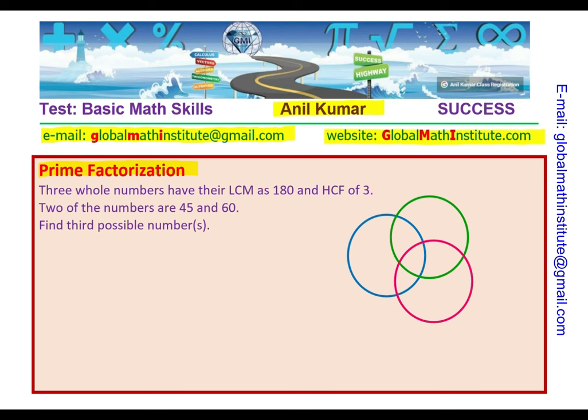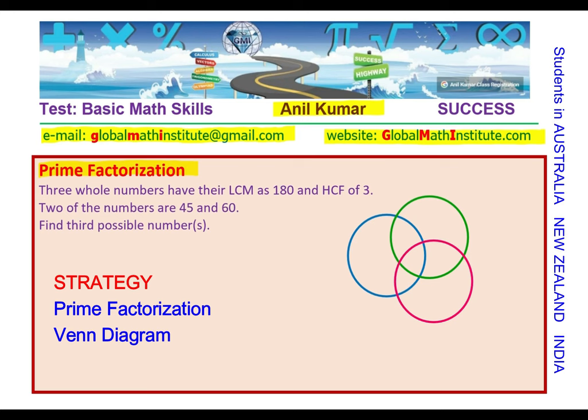We are given two numbers and on the right hand side, see we have given you three circles. This is to make a Venn diagram and that can help us answer this particular question. One of the methods to answer such questions is to utilize Venn diagram. We are given that out of the three numbers, two are 45 and 60.